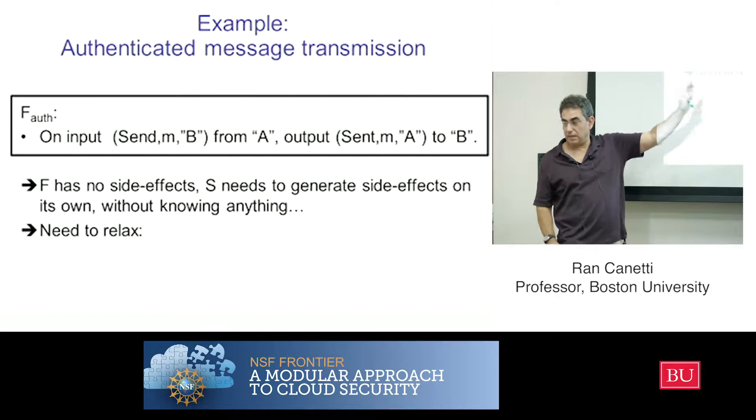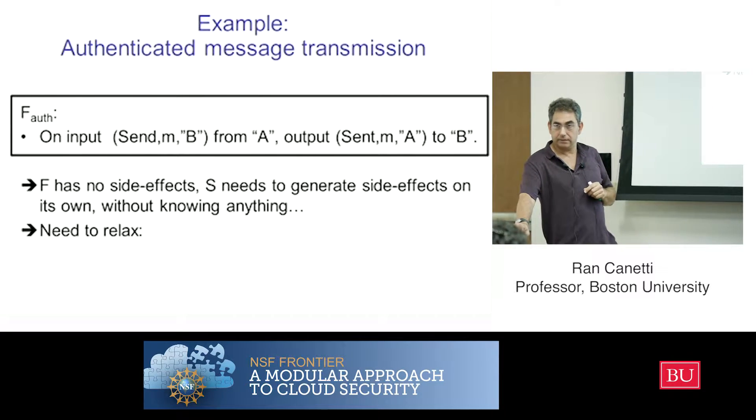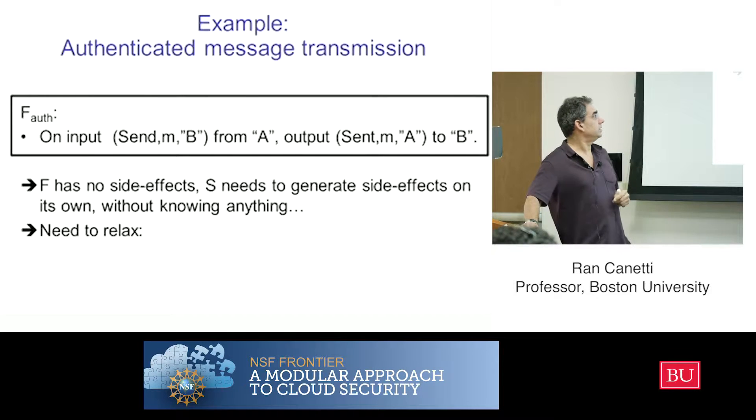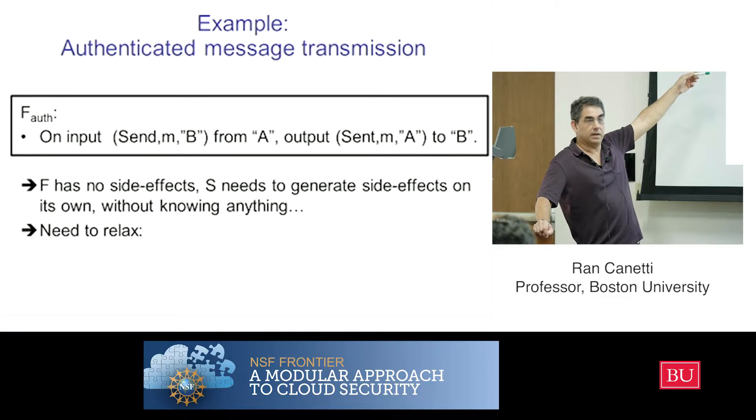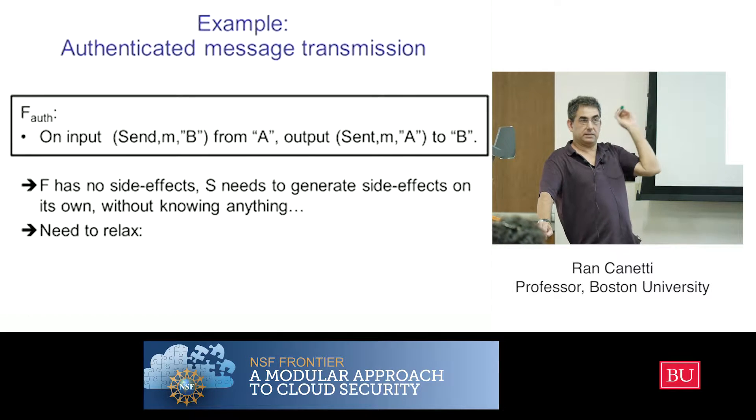So this is just the functionality, the API that I want to give to the outside world that uses me. But this is a very strong functionality or service because it has no side effects. In particular, it doesn't tell anything to the simulator. If this is going to be implemented on a real network with messages that are sent, and the environment sees those messages, then S is going to need to generate this without knowing nothing.